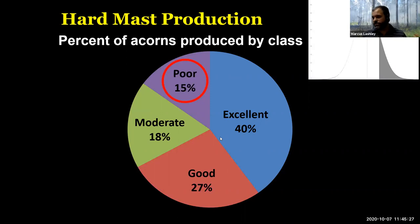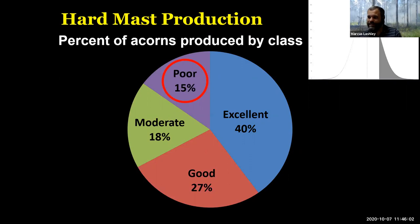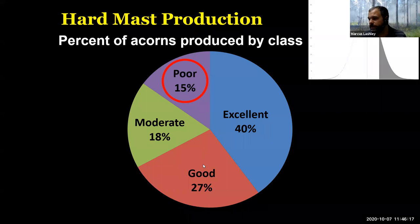That's pretty substantial. Think about the shelterwood cut for a minute — we would go into a stand and the idea is just to maximize space, retaining oak trees in the overstory that might be poor or excellent producers. We're not taking that into account when implementing that shelterwood cut for timber management. But if we could figure out which trees are in which class and remove the poor half, we could maintain 80–85% of the mast production by cutting down half of the trees.